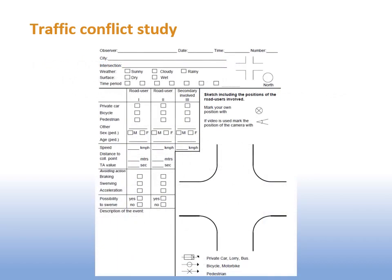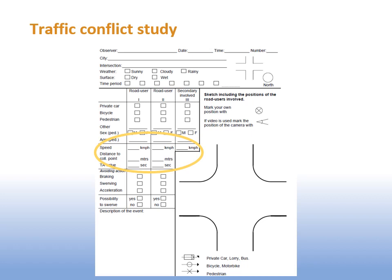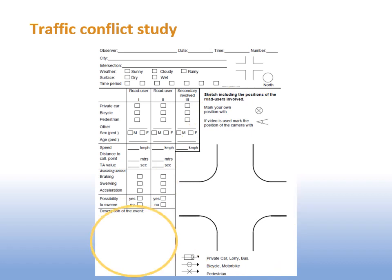For each conflict situation, it should be recorded: the time of the event; the road users involved, including possible secondary users; the speed of the involved users and their distance to the collision point; the type of evasive action; a sketch of the conflict; and the description of the course of events.